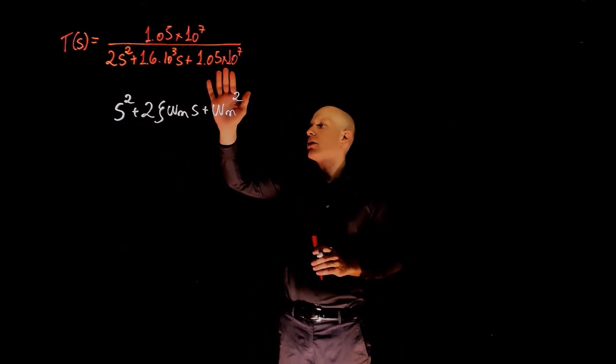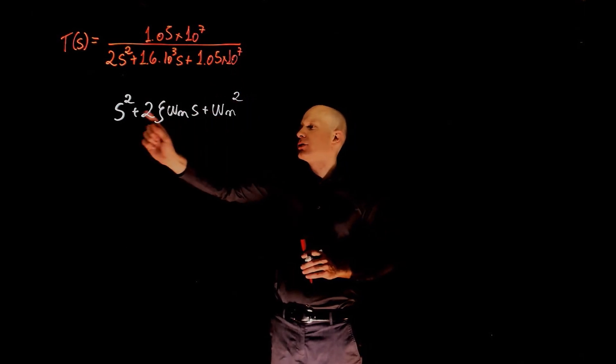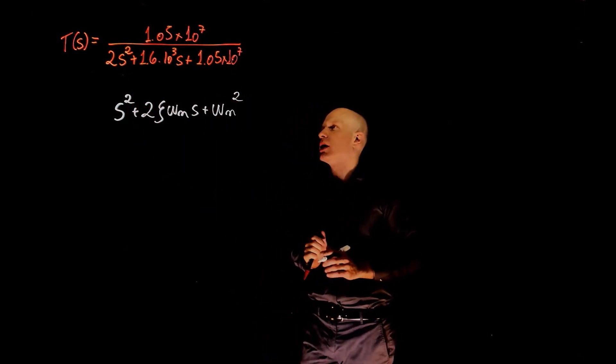So first we need to multiply the top and the bottom of the equation by 0.5 so that we have both coefficients of s squared multiplied by 1.